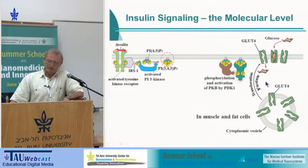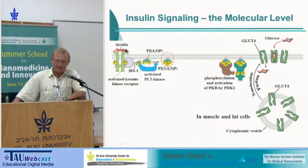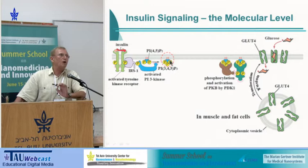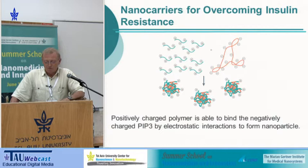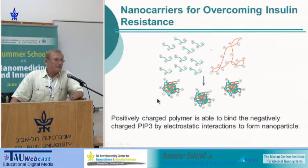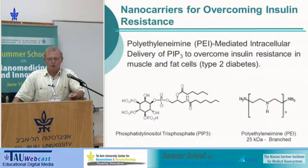Insulin reduces glucose concentration. If we have insulin resistance and want to overcome it, our approach was: can we, instead of using insulin, deliver PIP3 directly to the inner cellular membrane? PIP3 is negatively charged due to its phosphate groups, so if we use a positively charged carrier, we can complex PIP3 into that carrier and deliver it to the site of interest.